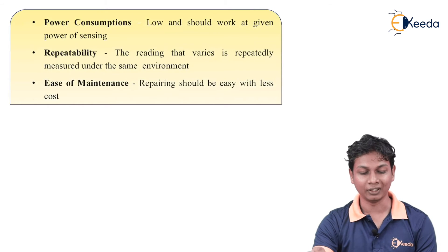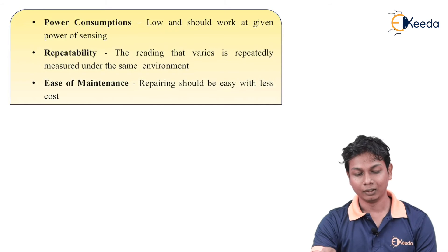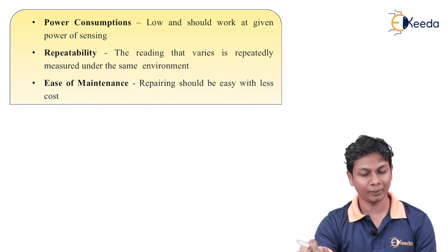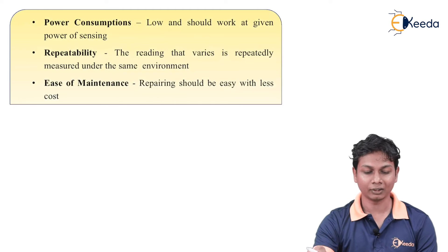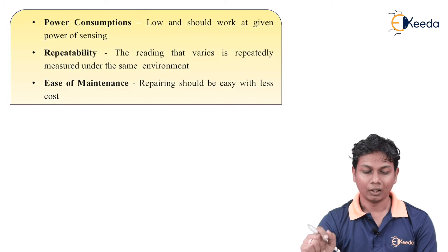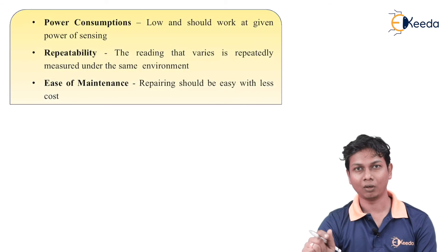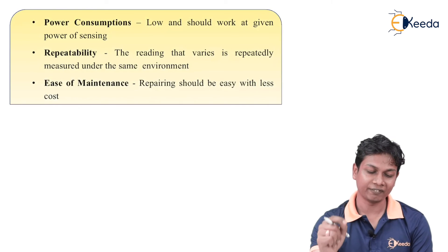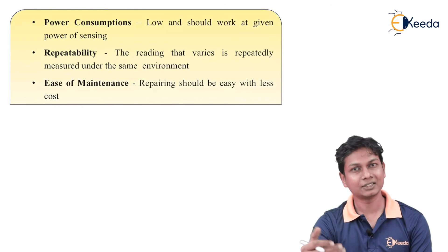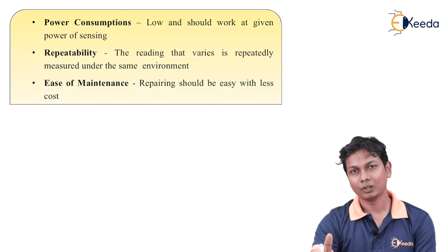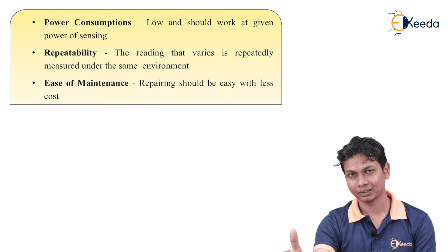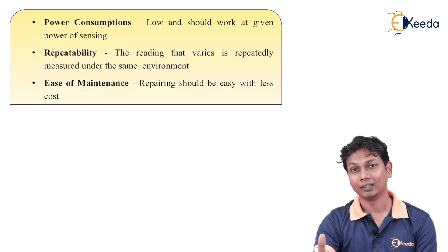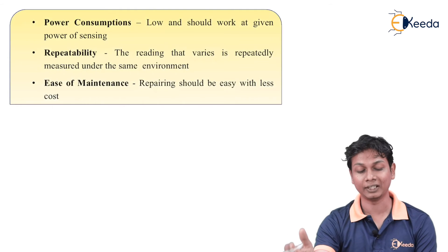The next part is repeatability. Repeatability is the variation in readings measured under the same environment. Under the same environment, the repeatability of a sensor should be low. If the environment changes with time or with any physical parameters, the variation in the output of a sensor — its repeatability — should be minimized.